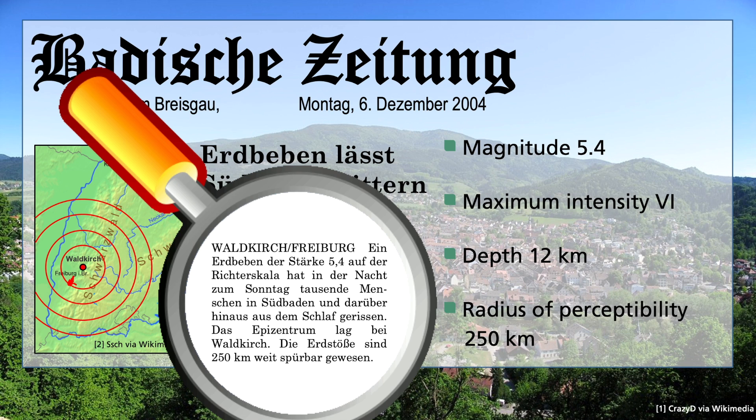It was perceptible within a radius of 250 kilometers, which encompassed Frankfurt, Munich, France, and all the way down to southern Switzerland. But wait a moment. What do the following mean: magnitude, maximum intensity, epicenter, and radius of perceptibility?